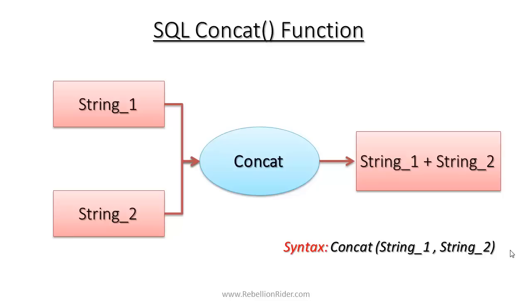This also means that it will return a single string, which is a combined string of parameter string 1 and string 2. Both the parameters of SQL Concat function, string 1 and string 2, can be of any data type. You can even specify the column name of the table here.